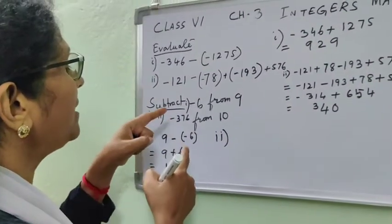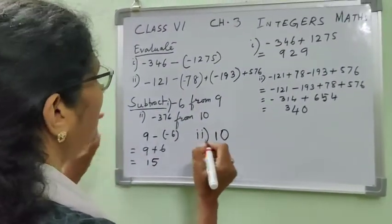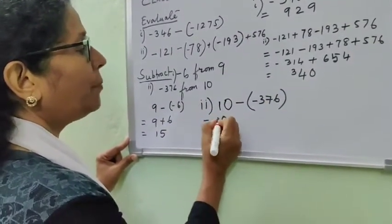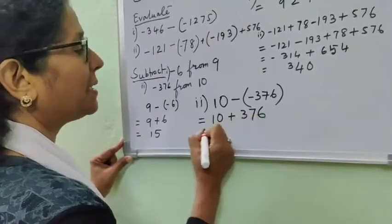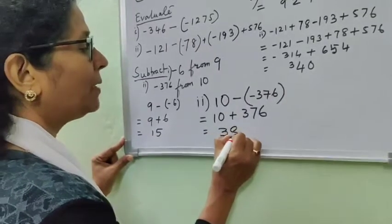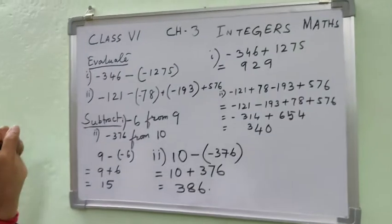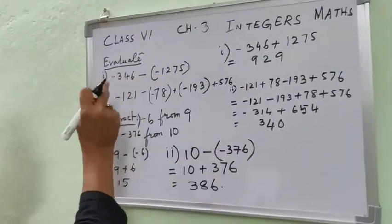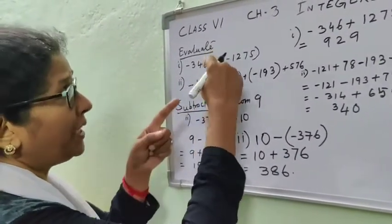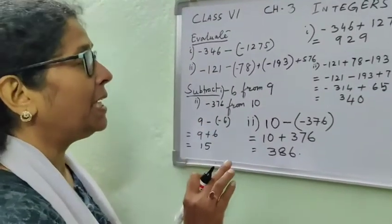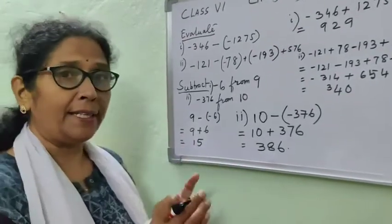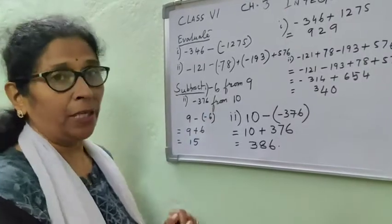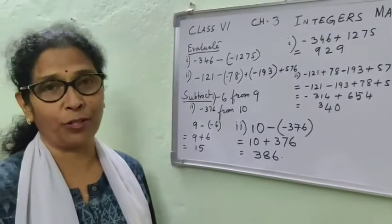Subtract minus 376 from 10. So write 10 first: 10 minus minus 376, which equals 10 plus 376. Both are plus, so you have to add and the answer comes 386. When any number with a minus sign is inside a bracket and there is a minus sign outside the bracket, the sign will change. If the number in the bracket has a plus sign outside, the sign will not change and the number remains as it is. Go through the chapter, enjoy all the sums and try to solve them on your own. Thank you children.